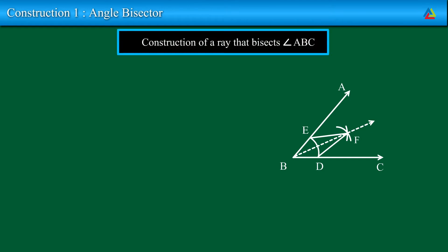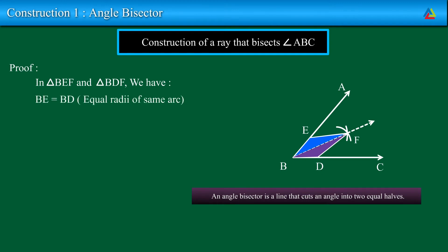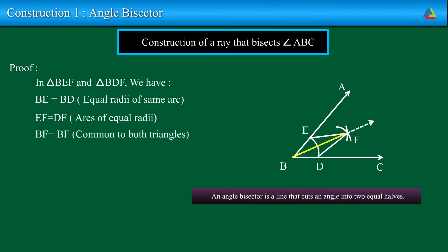Let us prove this. Construction of a ray that bisects angle ABC. An angle bisector is a line that cuts an angle into two equal halves. In triangle BEF and triangle BDF, we have BE is equal to BD because they are equal radii of the same arc. EF is equal to BF because they are arcs of equal radii. BF is equal to BF as it is common to both triangles. Thus, triangle BEF is congruent to triangle BDF by SSS congruence rule.